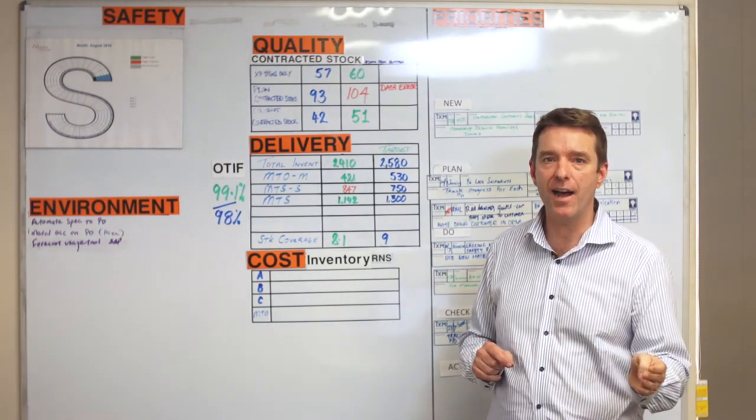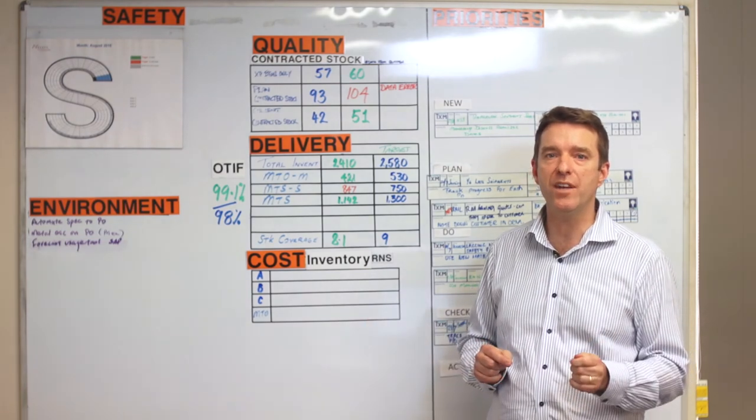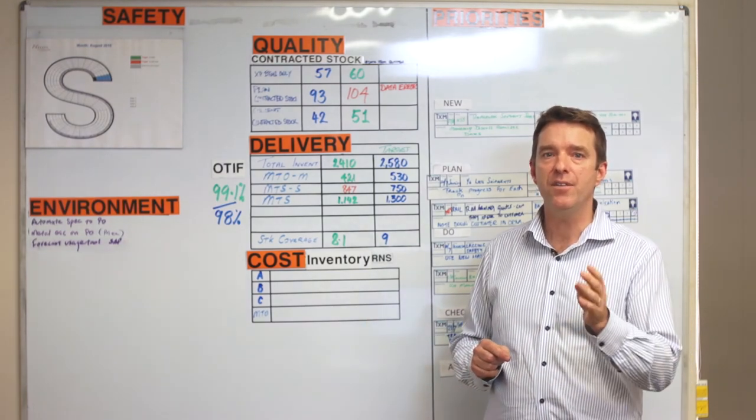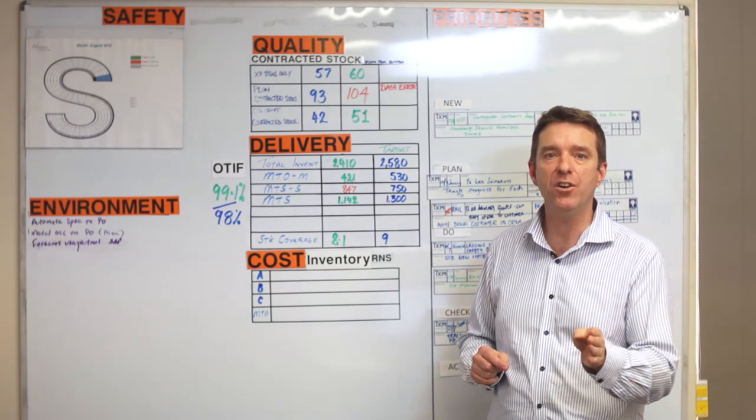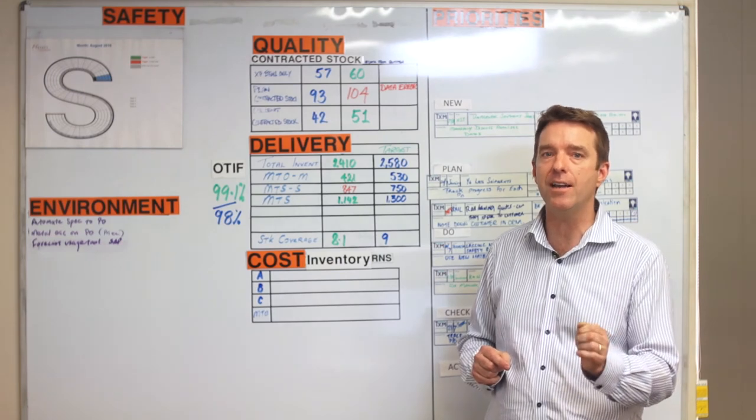Keeping it simple at the start and building detail over time ensures the right measures get picked by the right people. This helps ownership of the meeting, which in turn provides individual accountability and pride over the daily result.